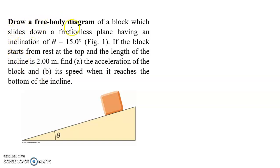Draw a free body diagram of a block which slides down a frictionless plane having an inclination of theta equals 15 degrees. If the block starts from rest at the top and the length of the incline is 2 meters, find A, the acceleration of the block, and B, its speed when it reaches the bottom of the incline.